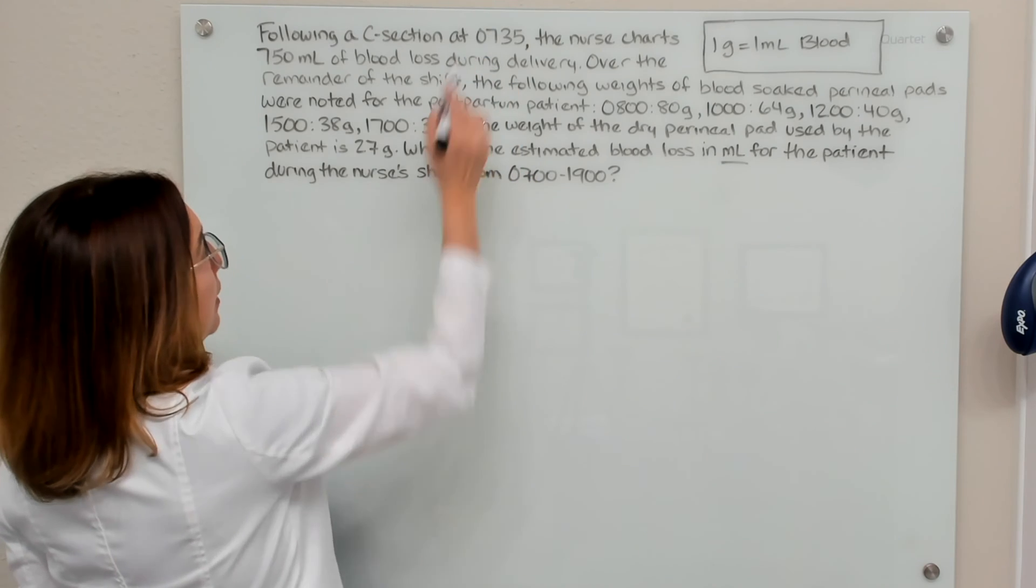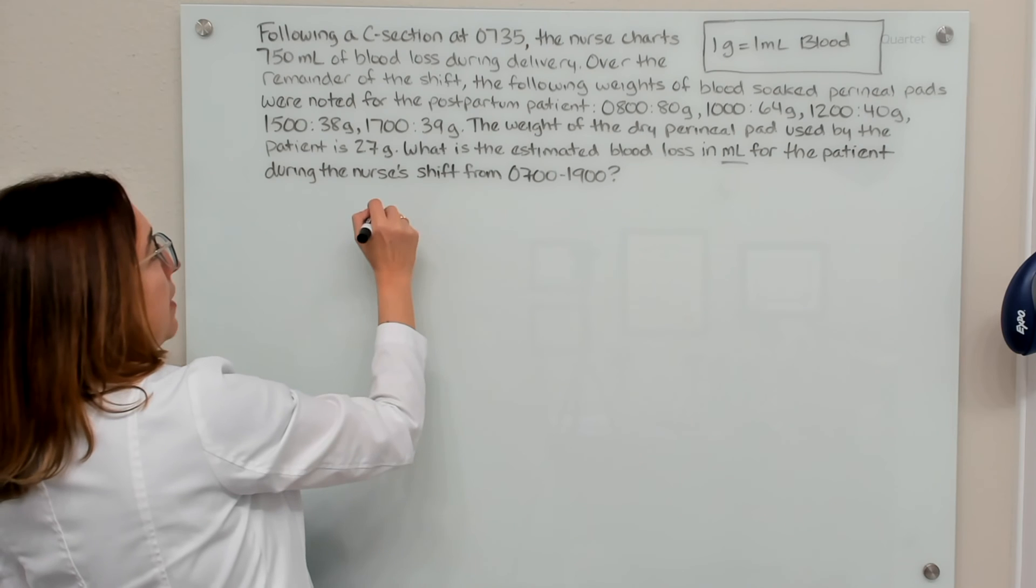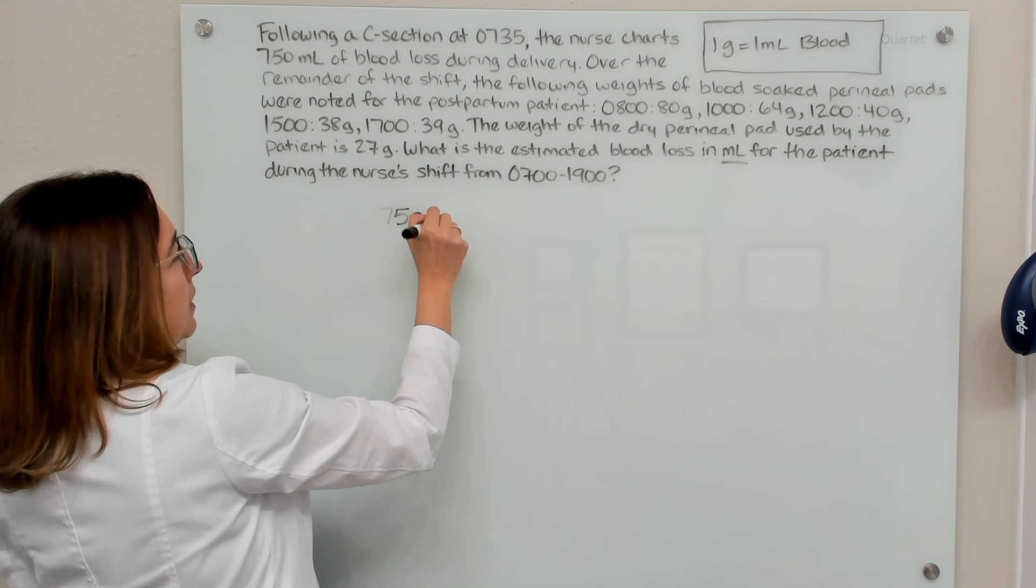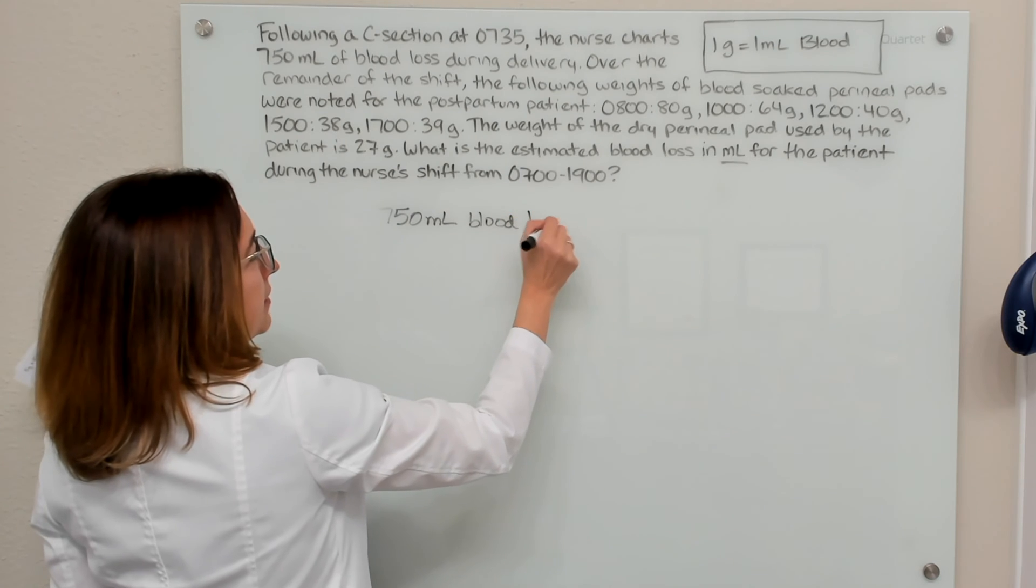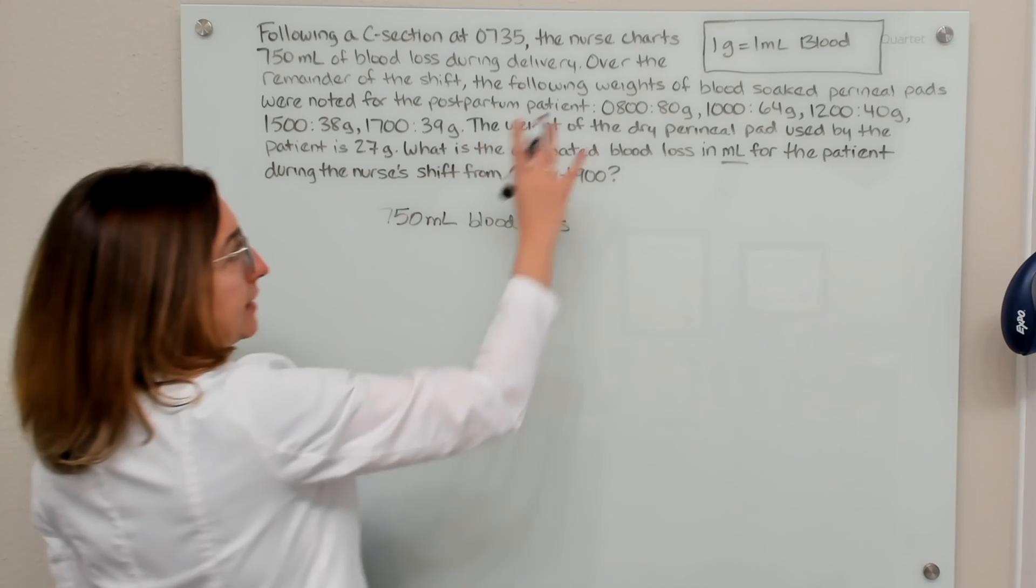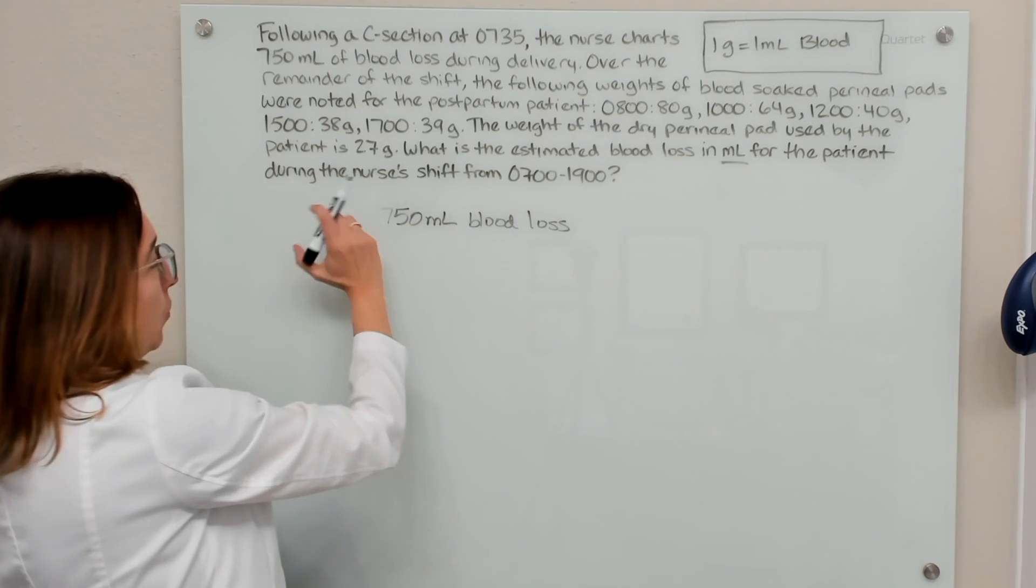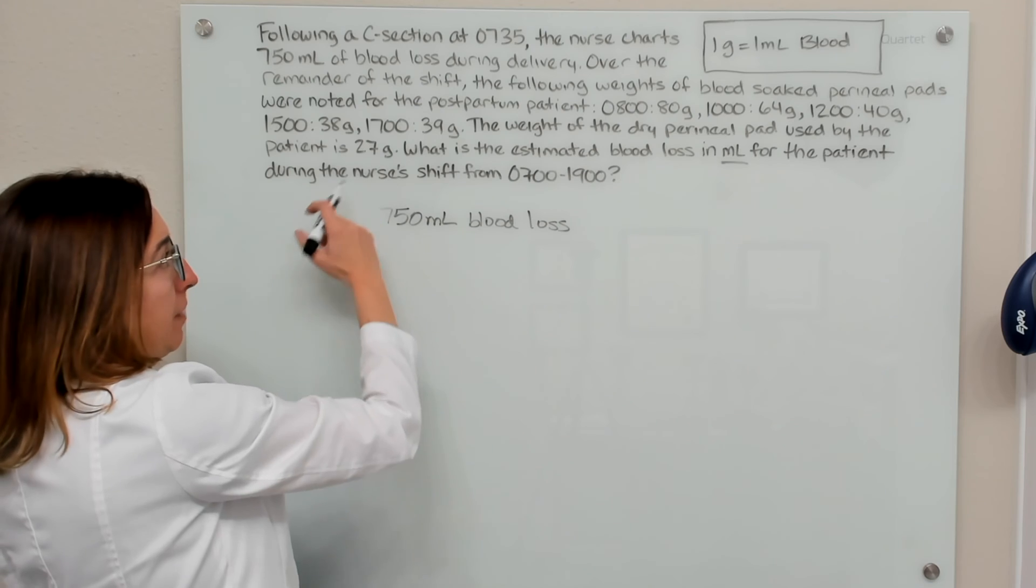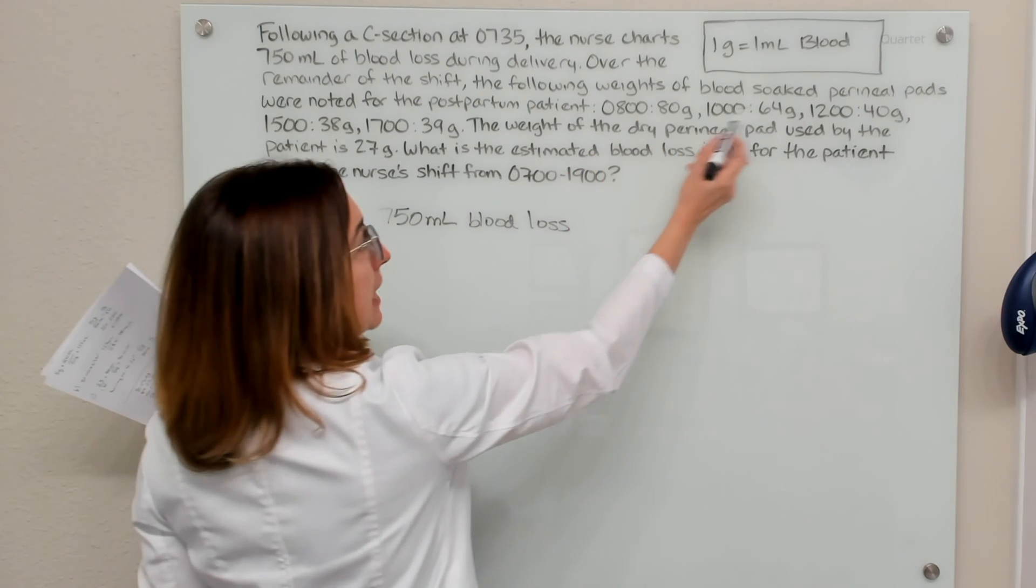Okay, so we know that our patient right out of the gate had 750 milliliters of blood loss from their C-section. And now we need to take the weights of their blood-soaked perineal pads, subtract out the weight of the dry perineal pad to get the blood loss for each of these times.